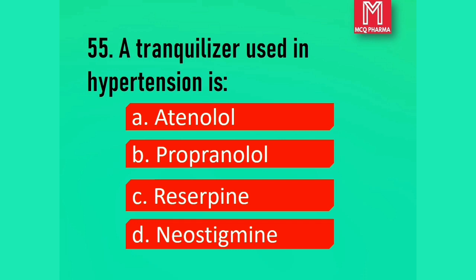Question number 55. A tranquilizer used in hypertension is: Option A, Atenolol. Option B, Propranolol. Option C, Reserpine. Option D, Neostigmine. Correct answer: Option C, Reserpine. Reserpine is an antihypertensive and antipsychotic drug used for high blood pressure.